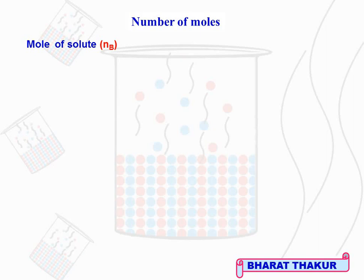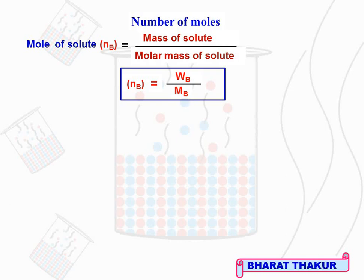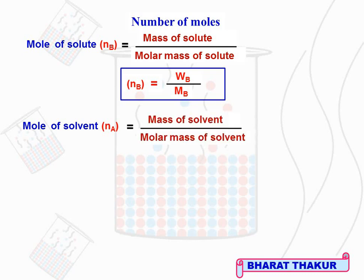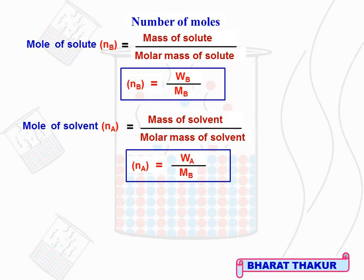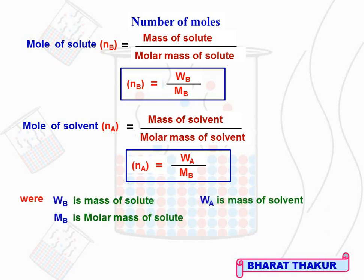Now, number of moles of solute is represented by NB, and equals mass of solute divided by molar mass of solute: NB = WB / MB. Similarly, moles of solvent represented by NA equals mass of solvent divided by molar mass of solvent: NA = WA / MA. Here WB is mass of solute, MB is molar mass of solute, WA is mass of solvent, and MA is molar mass of solvent. Note: there is a typo in the notes — it should be MA not MB for solvent.